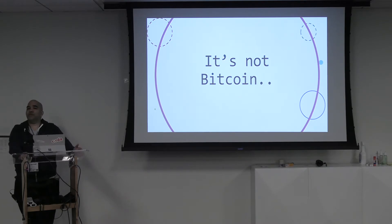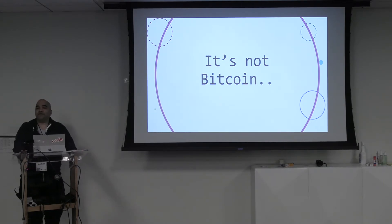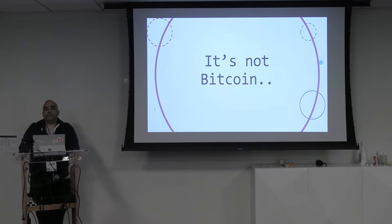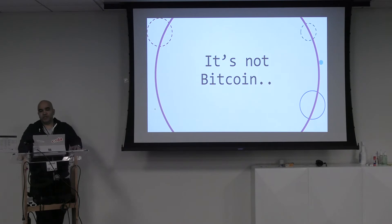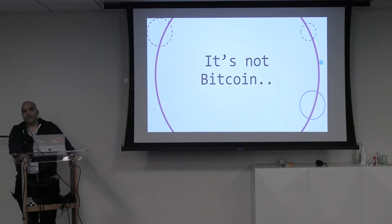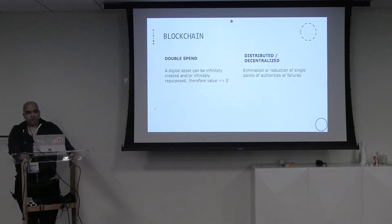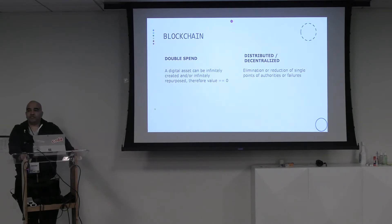First of all, blockchain is not Bitcoin. The two are not related — even though there is some overlap, they're going off in different paths now. Blockchain has grown into its own thing with its own trajectory and roadmap, and Bitcoin has its own thing. The two should not be conflated with each other. When you break blockchain down to what it really is, there are two key points. Number one: blockchain prevents double spend.